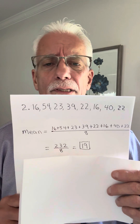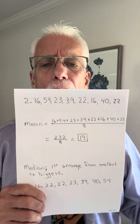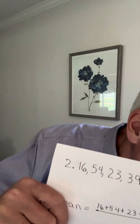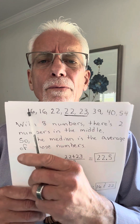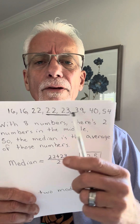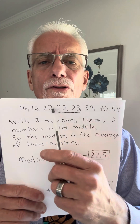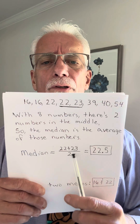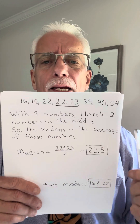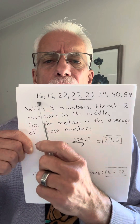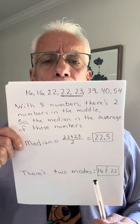Again, a lot of times we get decimals, but this is just so you get the understanding of mean, median, and mode. The median — after we rearrange them from smallest to biggest, this time there are eight numbers. Half of eight is four, so the fourth and fifth numbers are the median. When there are two numbers in the middle, we have to average those two. Between 22 and 23 is 22.5, so the median is 22.5. This one has two modes — I see two 16s and two 22s — so the modes are 16 and 22.